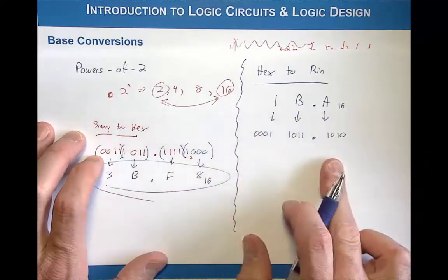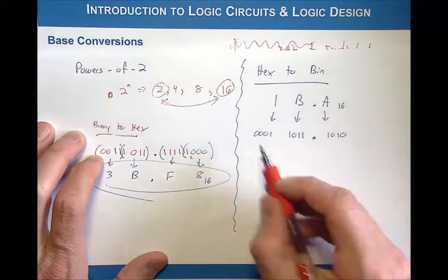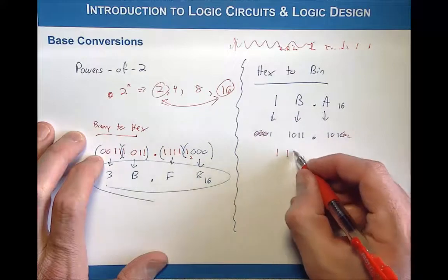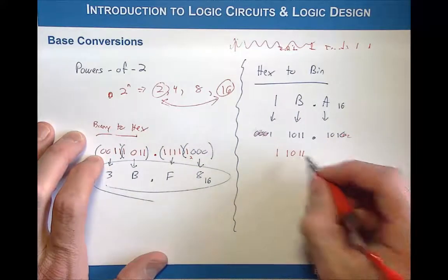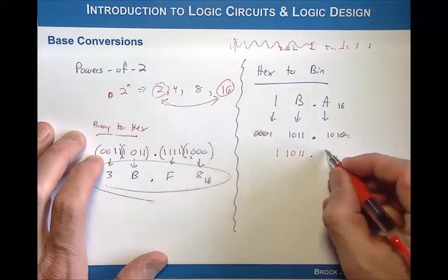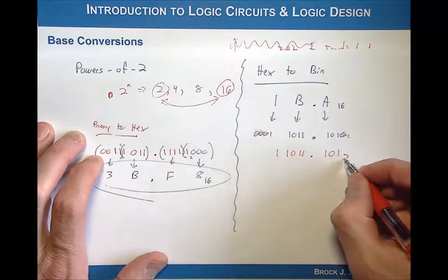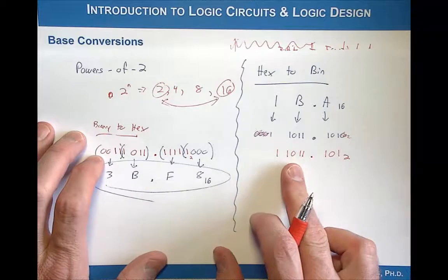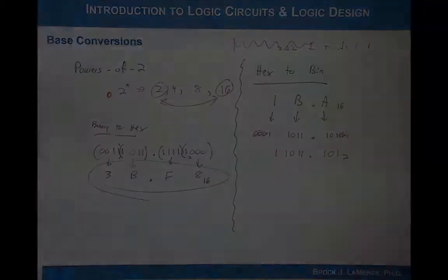At this point I can get rid of my leading zeros and my trailing zeros and come up with the final number of 11011.101, and that is then base 2. So that is how I converted from hex to binary. Alright, and that is it.